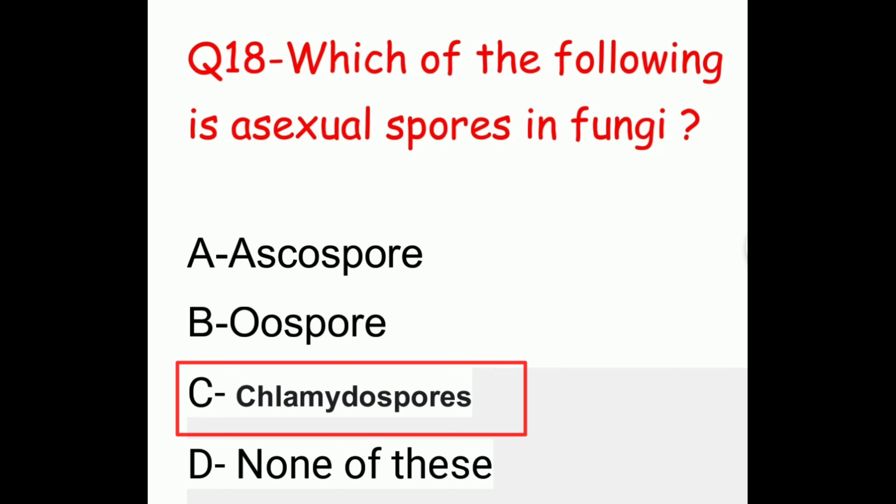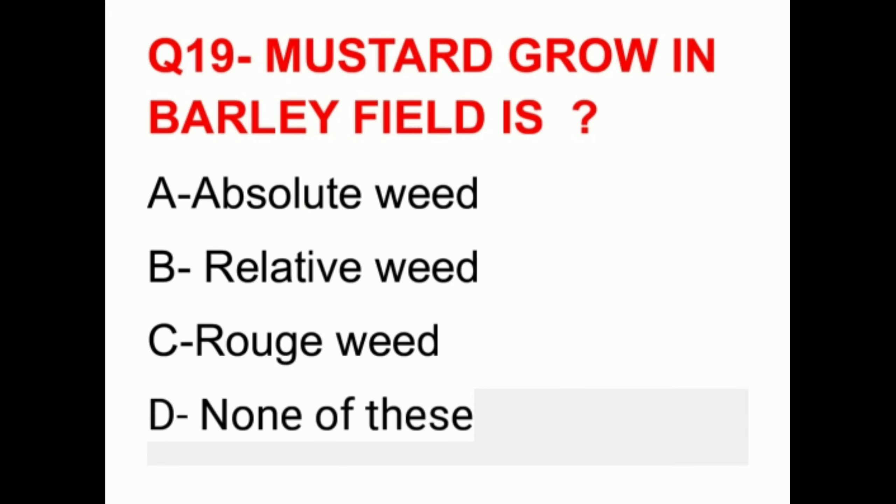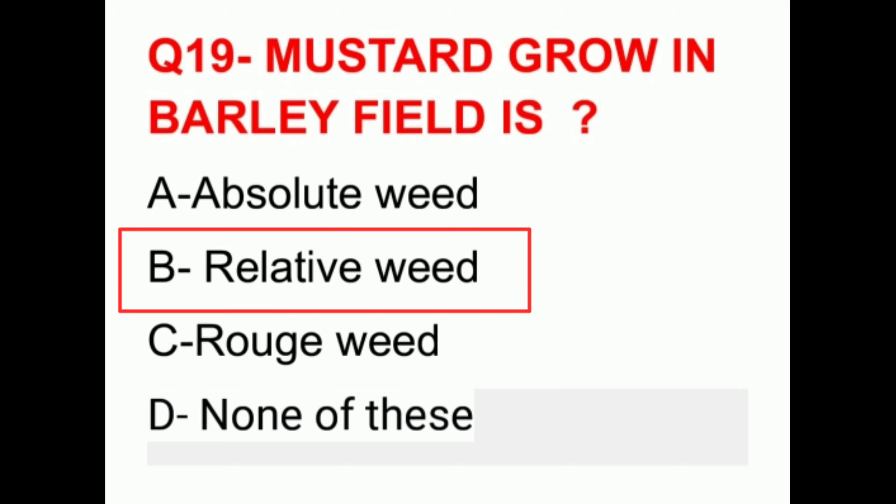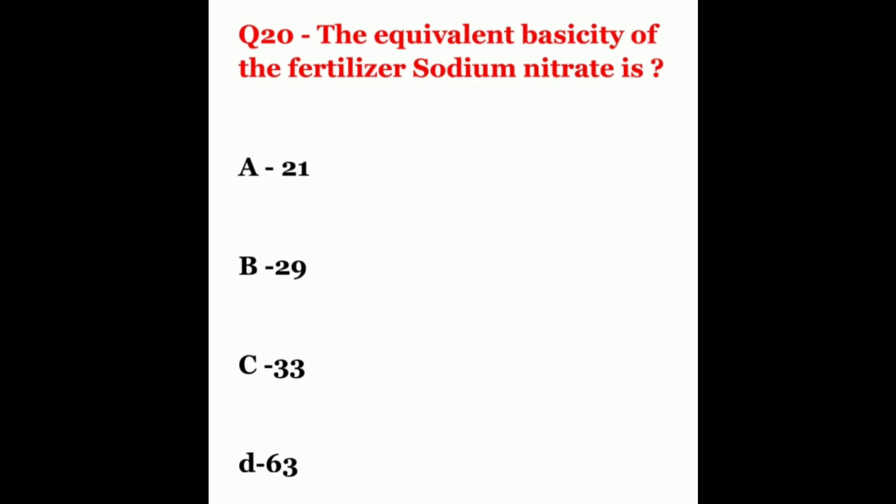Question 19. Mustard growing in a barley field is? The options are absolute weed, relative weed, rose weed, or none of these. The correct answer is relative weed.